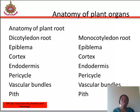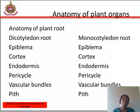Endodermis is the layer situated between the pericycle and the cortex. Passage cells provide paths to absorb water from the cortex to the pericycle. Pericycle is a single layer; it is composed of parenchyma, and lateral roots originate from the part of the pericycle lying opposite to the protoxylem. Vascular bundles are radial; xylem and phloem are separate and differ in number.